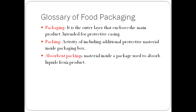Absorbent packing is a material inside a package used to absorb liquid from the product. You may have seen white pouches inside pharmaceutical tablets — those are meant for absorbing moisture. Similarly, in products like meat and rice, a plastic liner is used as absorbent packaging. Its primary function is to absorb moisture from the product and protect the outer protective layer, preventing moisture from escaping.